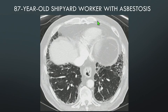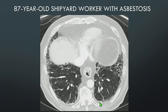Another patient: an 87-year-old shipyard worker. You can see angulation on some of the septa — one especially shows that angular appearance — along with traction bronchiolectasis, lower lobe predominance, and subtle calcified pleural plaques visible even on lung windows. This is a patient with asbestosis.